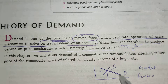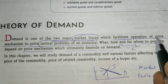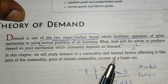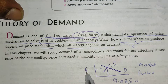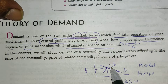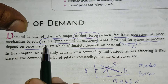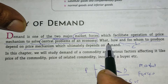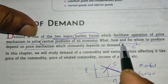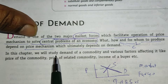Supply and demand are the two major market forces. Demand is one of the two major market forces which facilitates the operation of the price mechanism. What, how, and for whom to produce all depend on the price mechanism.